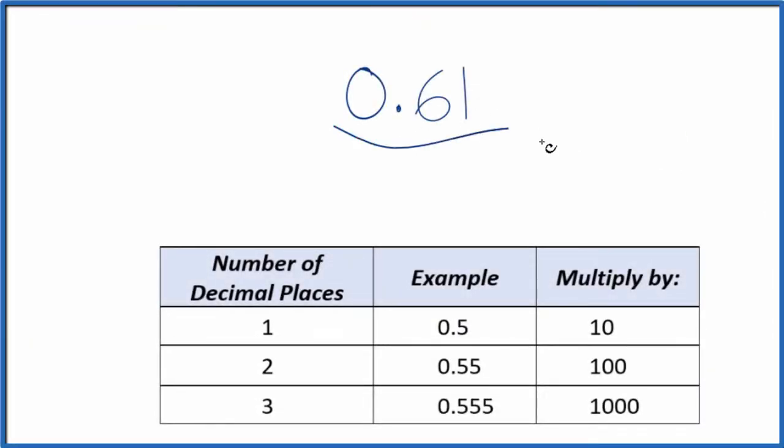Let's convert the decimal 0.61 to a fraction, and here's what we'll do. First, let's call it 0.61 over 1. It's still 0.61. We're just dividing by 1, but now we have the start of a fraction.